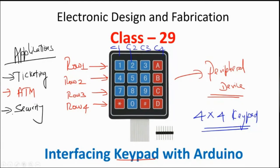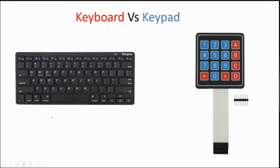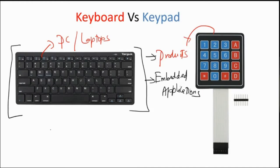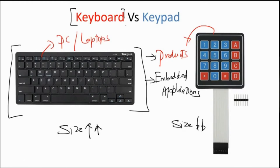For example, if you want to enter a secure place, you enter a password using a keypad. In all applications where you get data from a user, we connect a keypad. You have to understand clearly the difference between a keyboard and a keypad. A keyboard is a large device with 100+ keys connected to general-purpose computers or laptops — not intended for embedded applications. A keypad, on the other hand, is compact and used in embedded products.